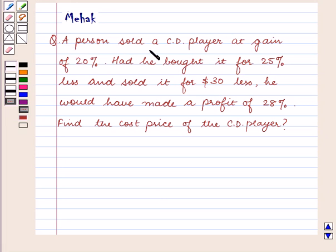A person sold a CD player at a gain of 20%. Had he bought it for 25% less and sold it for $30 less,